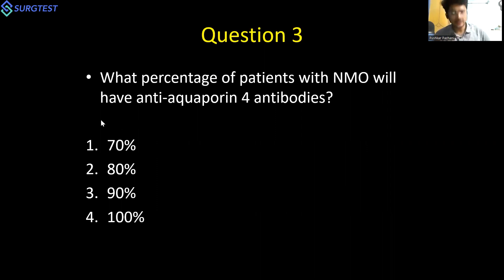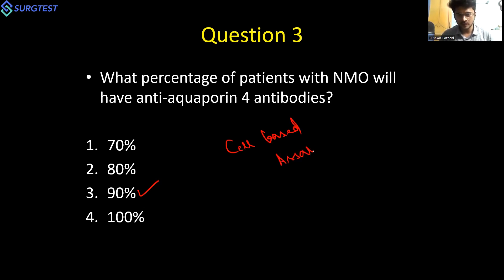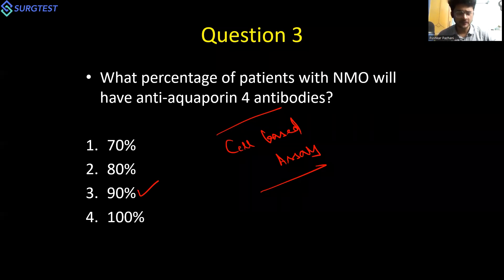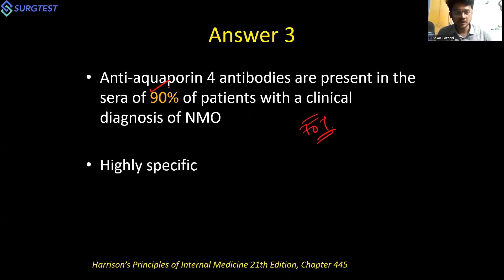Most answered 80%, but the correct answer is 90%. Anti-aquaporin-4 antibodies are present in the sera of 90% of NMO patients — this is updated from the earlier edition of Harrison's which stated 70%. The technique used to detect this antibody is the cell-based assay, which is much more superior to ELISA. NIMANS, for example, performs the cell-based assay. The antibody is highly specific as well as sensitive.